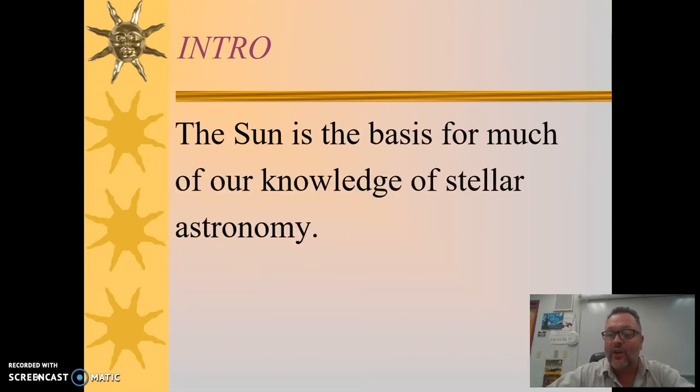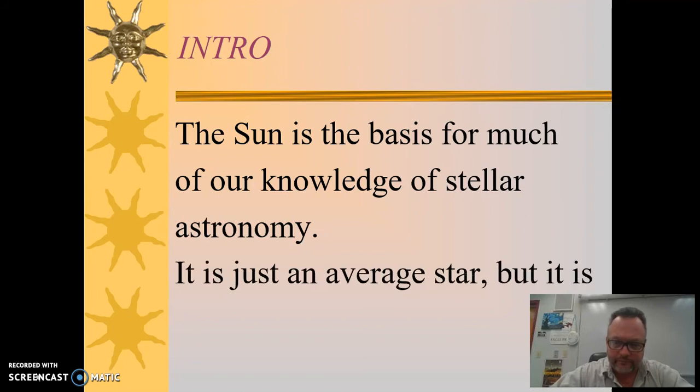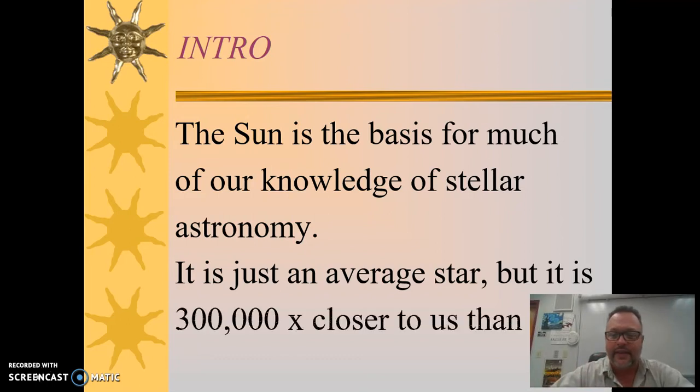The Sun is the only star that we can study up close. It's the only one we can travel to, so a lot of our knowledge of stars, which we'll get to later this quarter, comes from our very own Sun. It turns out that we have a very average star in many ways, in terms of brightness and size and temperature. So I guess that's good if you're only going to have one star that you can study up close. At least it's kind of a pretty typical star.